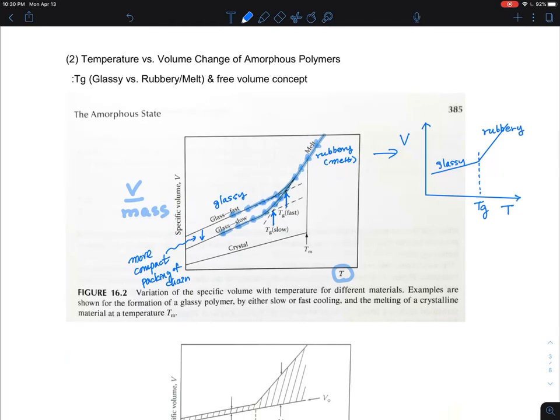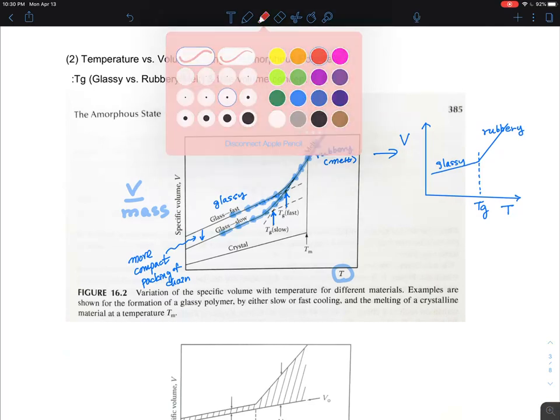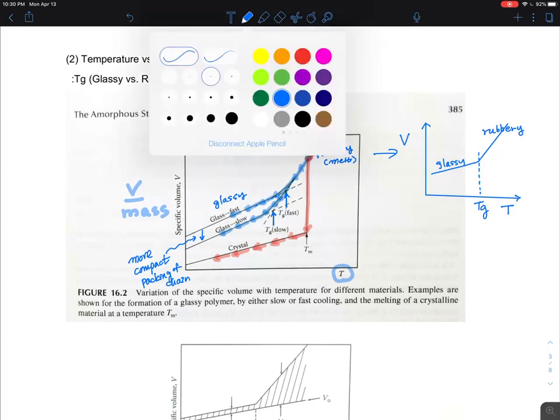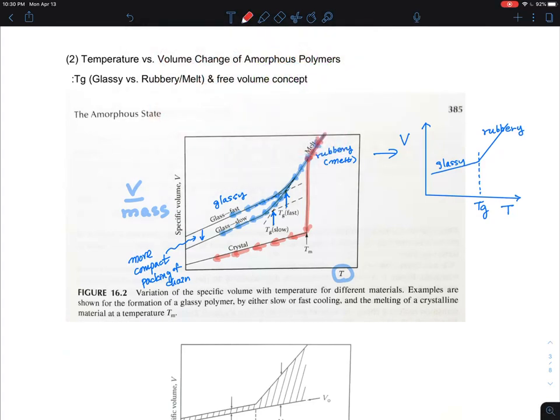I'm going to use a reddish color to tell you about melting transition. Melting transition is the same drill: you cool it down, and at some point you have a discontinuous drop when they form the melt-like polymers and form crystals, and then they start cooling down.